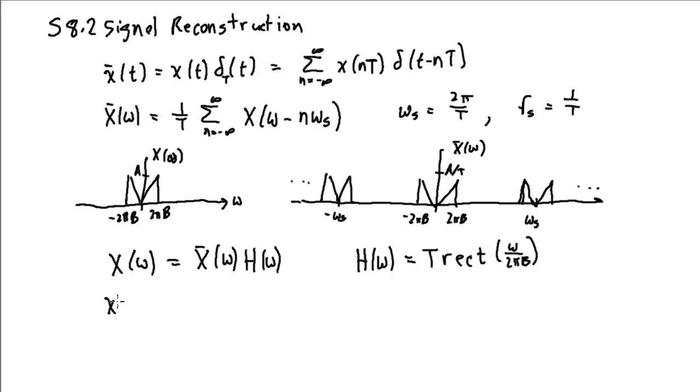In time domain, this multiplication becomes convolution, and so it says we can recover our original signal by convolving x bar of t, our ideally sampled signal, with the impulse response of this low-pass filter. The impulse response is the inverse Fourier transform of the frequency response, and that's a sinc function, 2 pi b t.